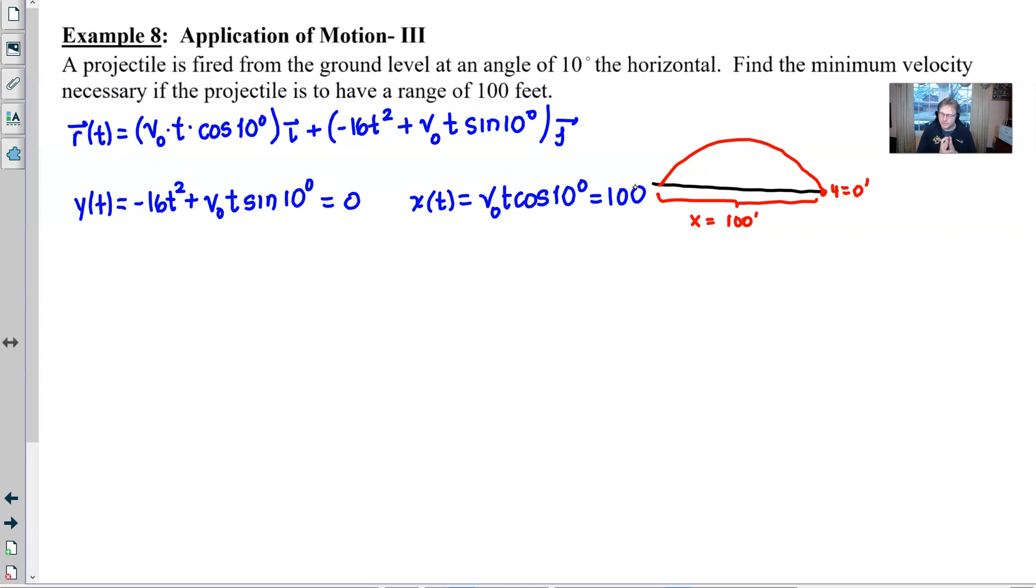So by solving these simultaneously we're going to be able to accomplish what we want to accomplish. It doesn't really matter if you want to solve it for v₀ or if you want to solve it for t. Since we're trying to find the value of v₀ maybe solving these for t might be better. Let's see what I mean by that. The problem with solving this for t is that this one's a little trickier.